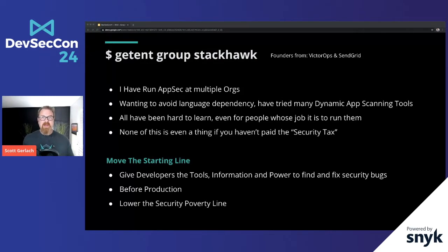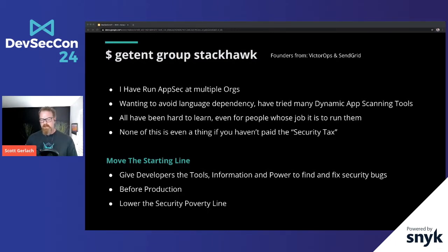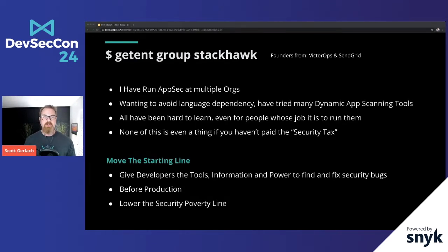None of this is even a thing if you haven't paid the security tax — meaning you haven't invested in a security department. You may have a tool here or there giving you some information, but it's disjointed and hard to understand what to fix. So what we decided to do is try to move the starting line — give developers the tools and information to find and fix security bugs before they get into production, on the local desktop, in the CICD pipeline, in staging, and in production.